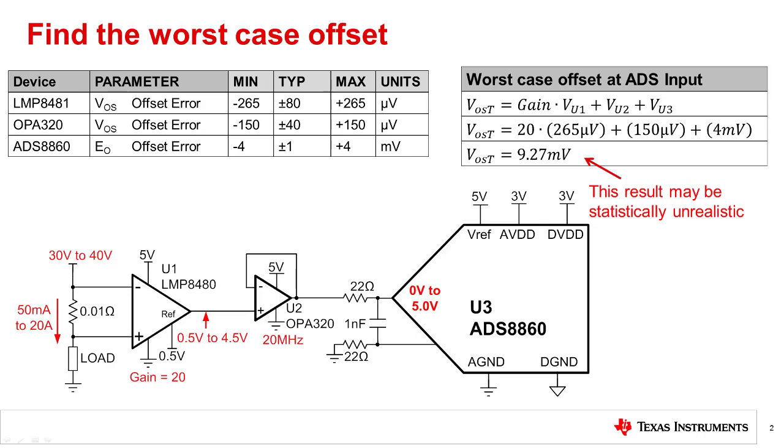Let's find the offset error seen by the data converter considering all of the elements in the signal chain. The current shunt amplifier, U1, has a gain of 20, so the output offset is increased by 20. The buffer, U2, has a gain of 1, so the output offset from U1 directly adds to the offset of U2 and the ADC U3.